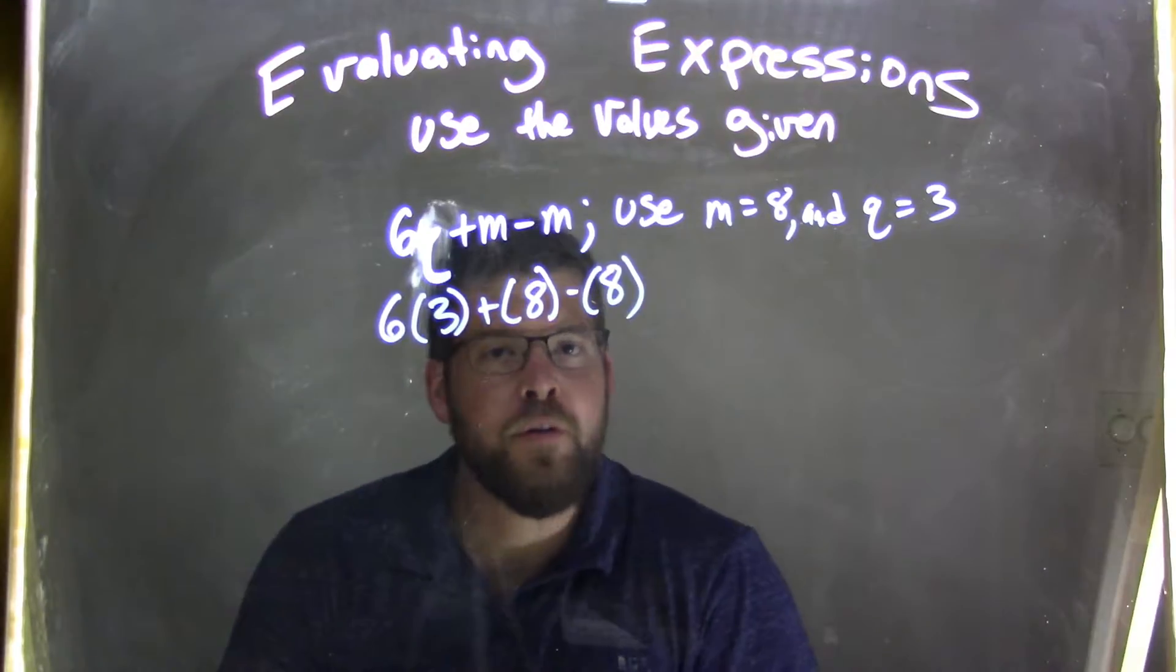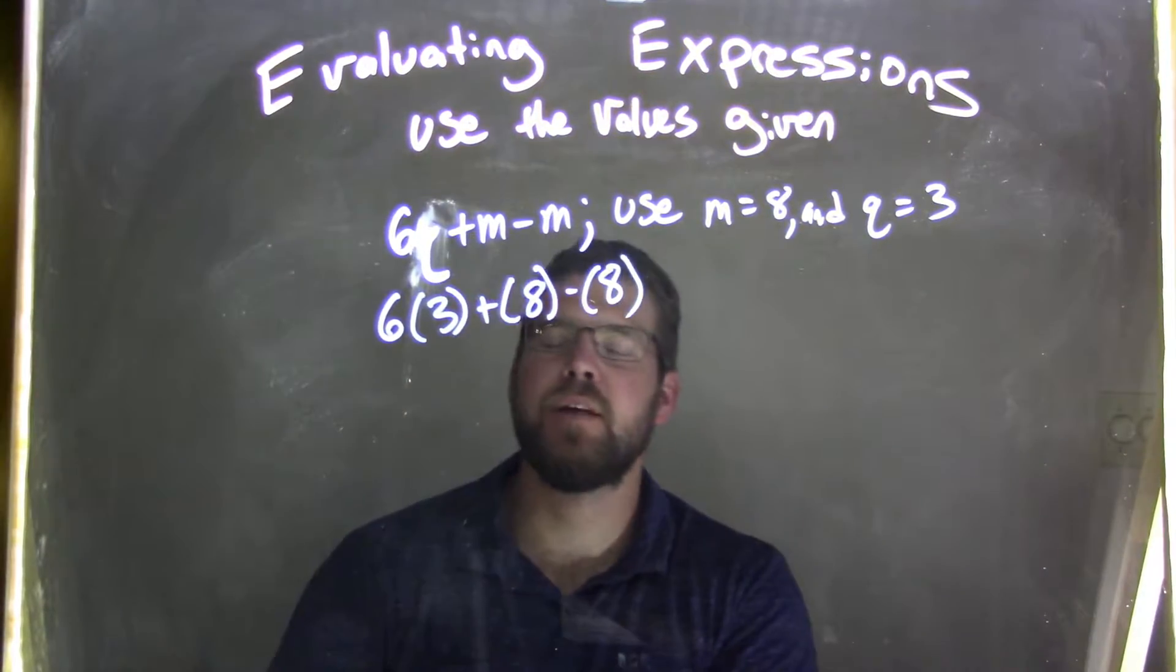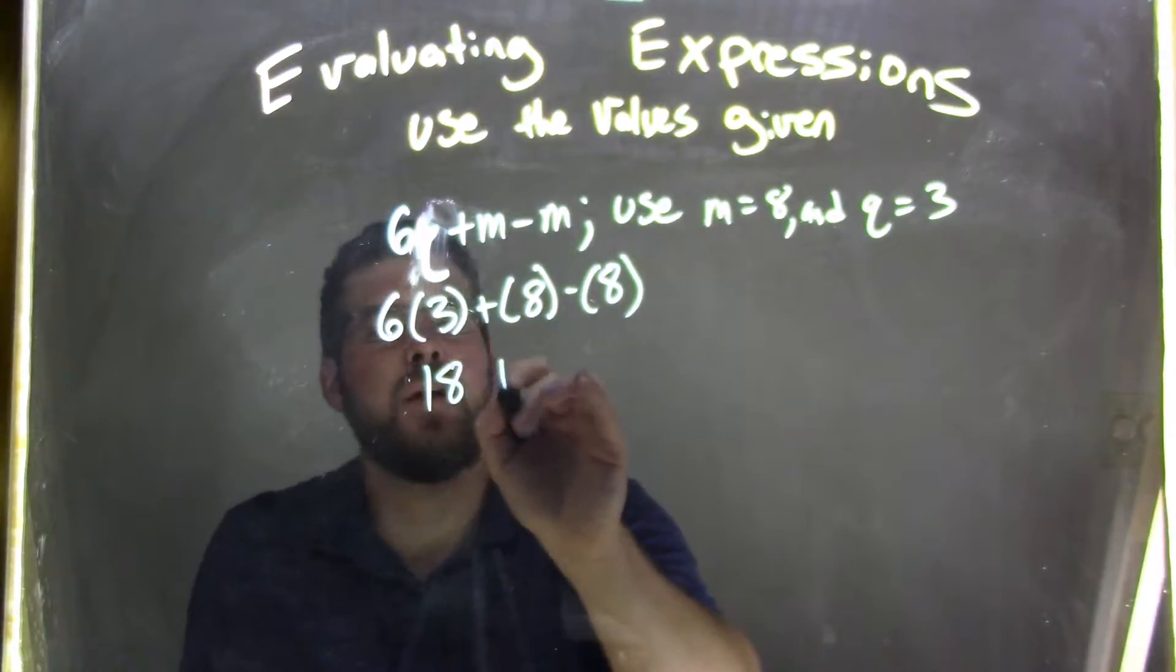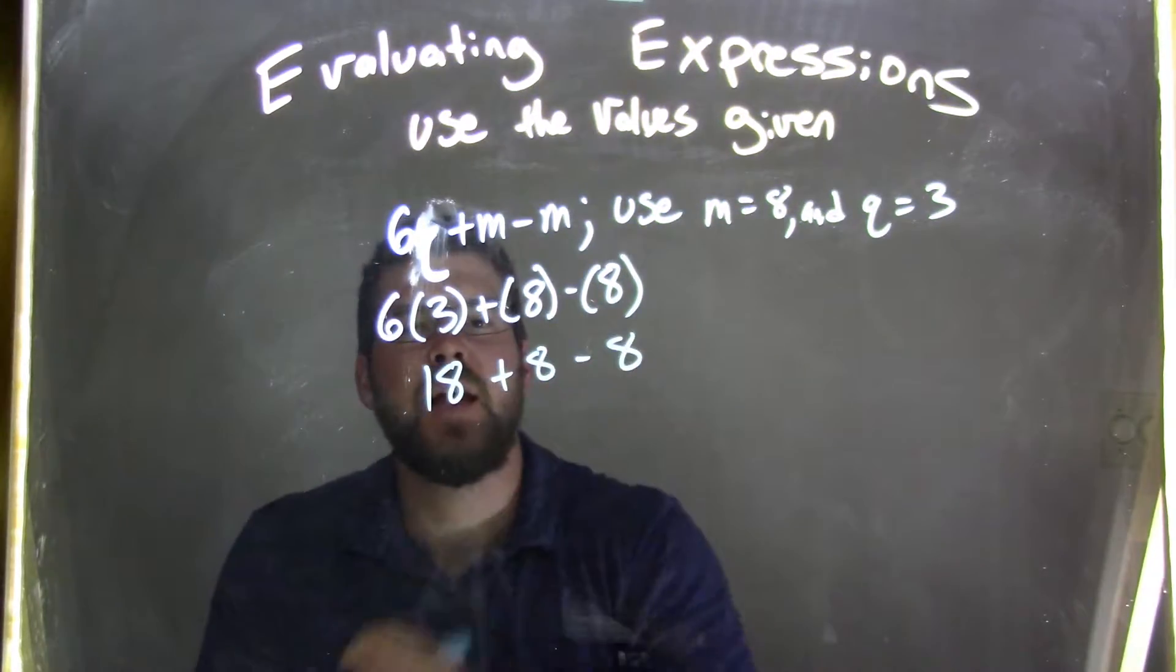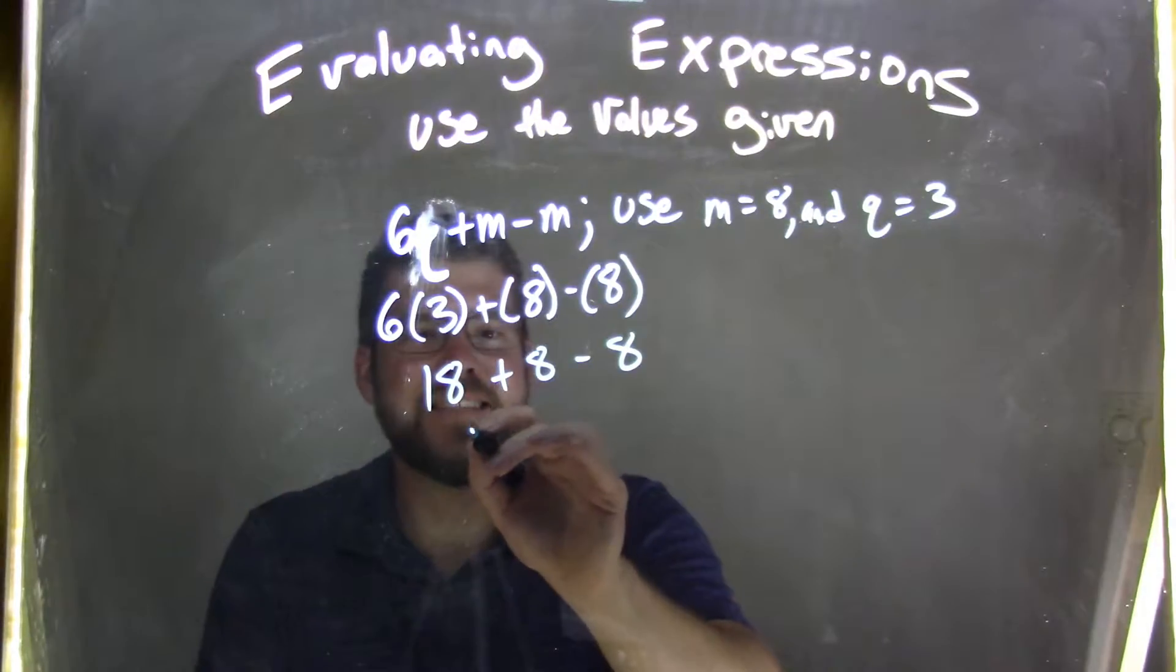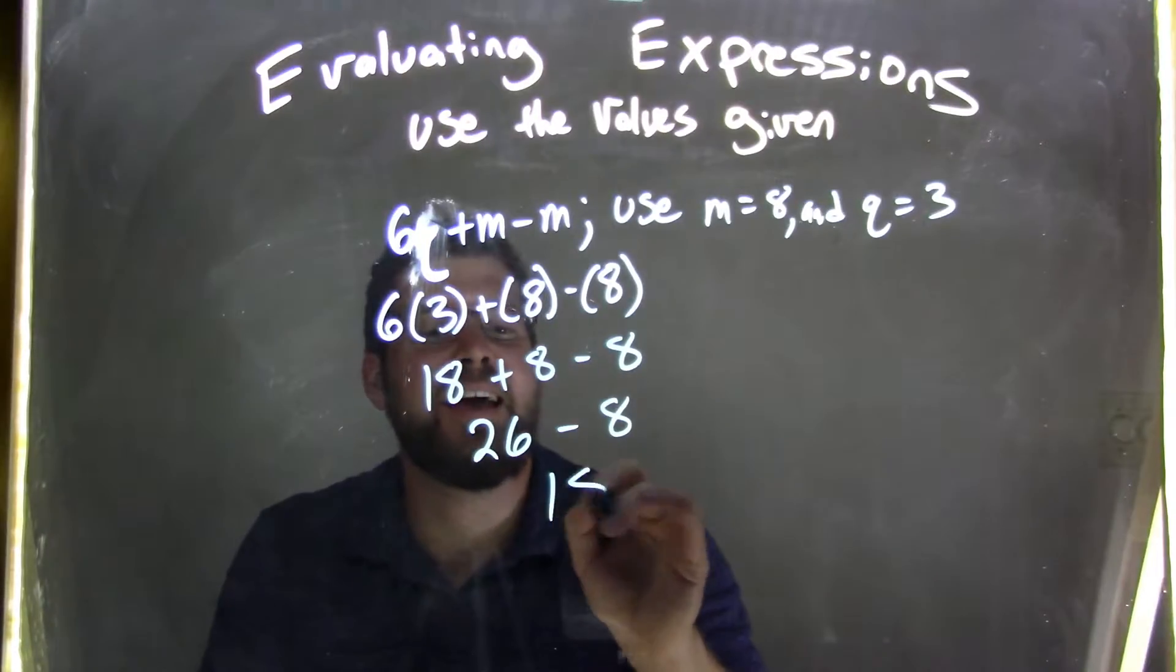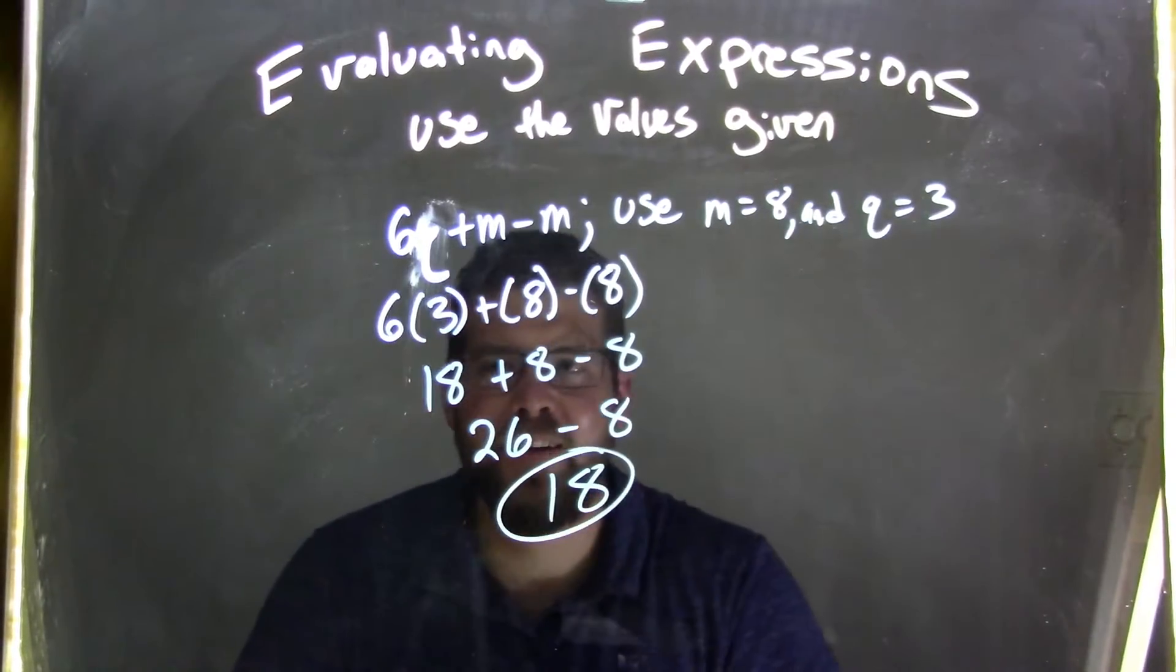Now we think about our order of operations. 6 times 3 comes first, which is 18. Add 8, minus 8. 18 plus 8 is 26 minus 8, and 26 minus 8 comes out to be 18, our final answer.